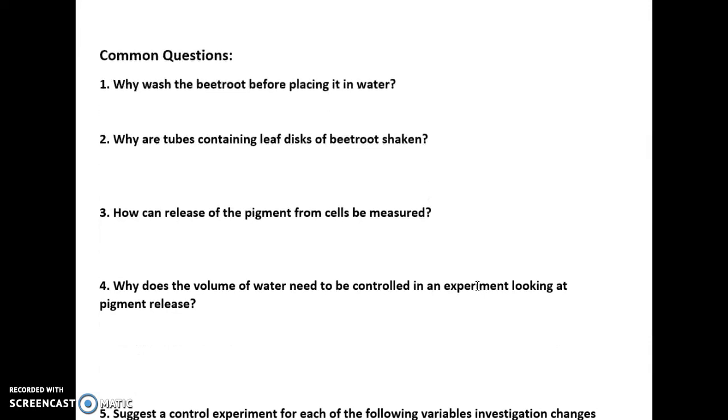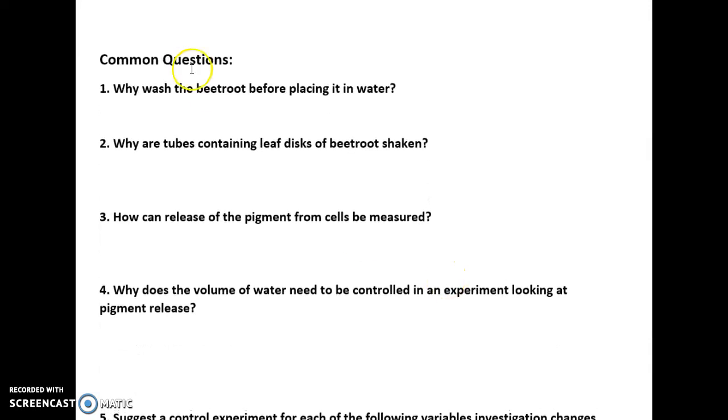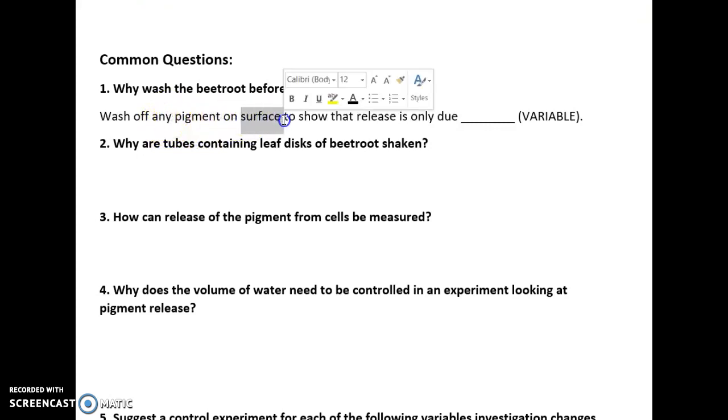Here are some common questions that come up with this topic. The first question is, why do we wash the beetroot? This uses the context of a beetroot being placed in water to see the release of pigment. Why must the beetroot be washed before it's placed in the water? That is to wash off any pigment on the surface. However, you've got to be very specific. Why do we wash that off? So we can show that the release is only due to the variable that we are changing.